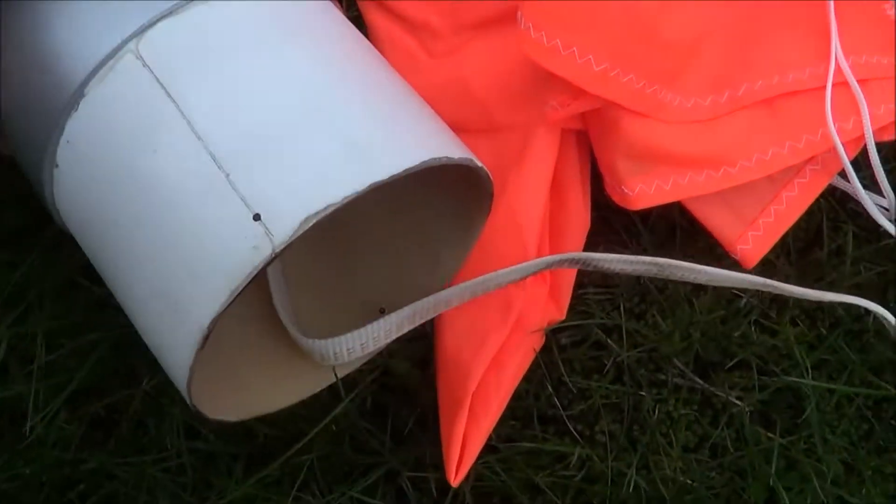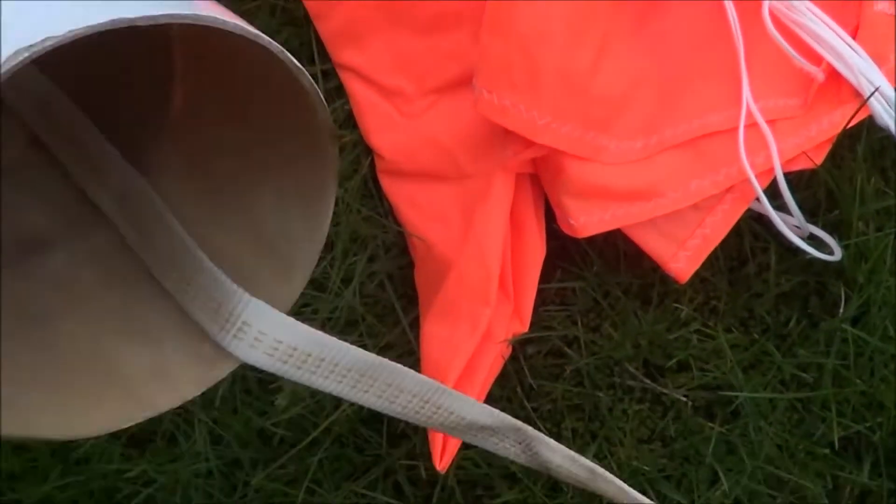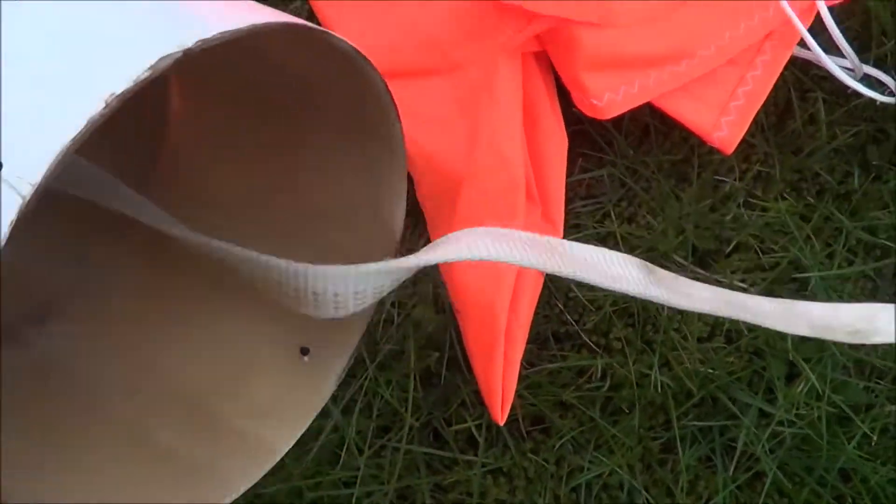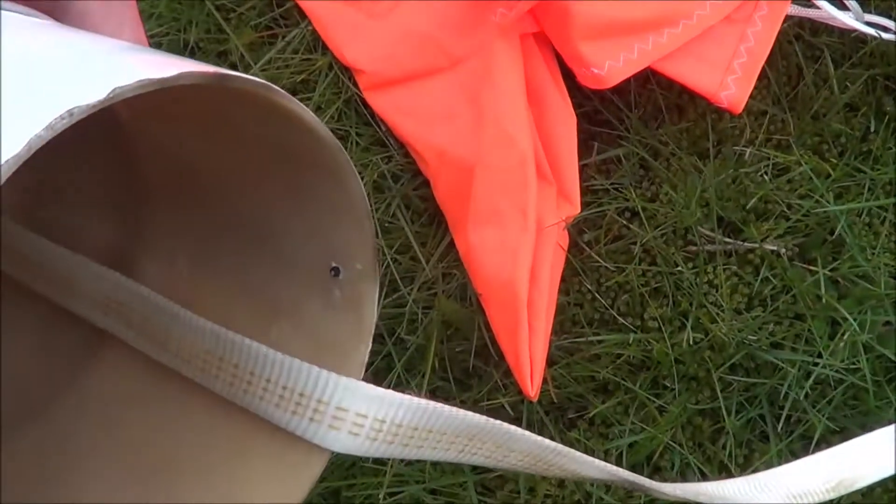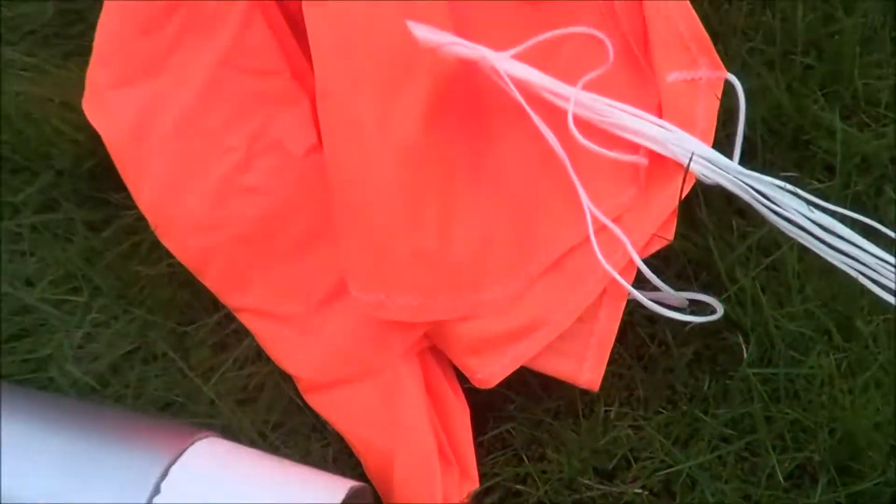And up here we have the nose cone. There's one of the shear pins. And there's the other one right there. You can see they broke beautifully. I think two shear pins are going to be perfect on this rocket.